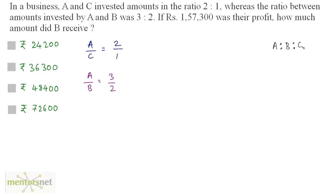From that, we can calculate the profit share of B. A is to C is 2 to 1 and A is to B is 3 is to 2. If I multiply this equation by 3 by 3, I will get 6 by 3. And if I multiply A by B by 2 by 2, I will get 6 by 4.